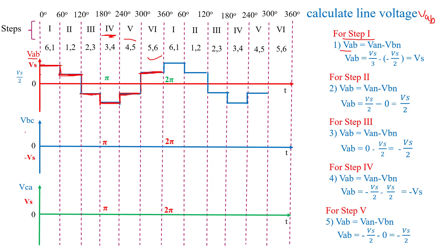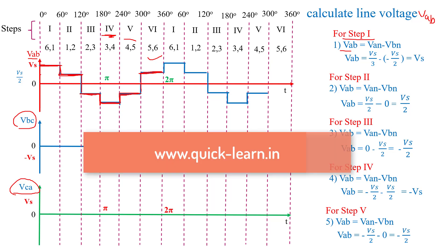Similarly, you calculate the line voltages VBC and VCA with the help of phase voltage. This completes the full calculation for the 3-phase 120-degree conduction mode. Hope you liked the video. If you have any doubt, please comment in the comment box. Please like, subscribe, and share my channel with your friends and juniors. If you want the notes, please visit my website at www.quick-learn.in.